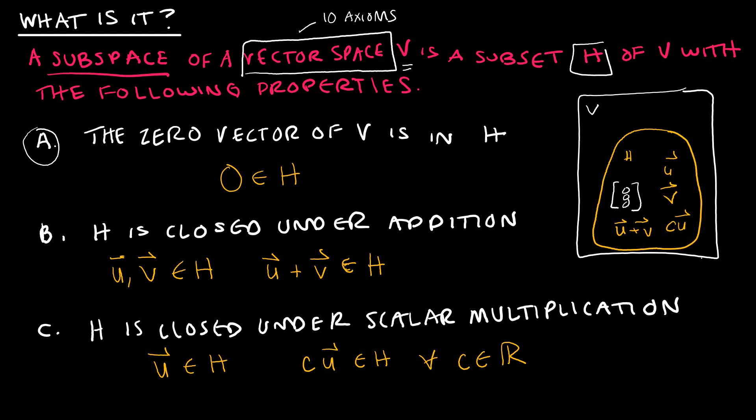So those are the three properties. Keep in mind that V has already met these 10 axioms. So for H, we really just need to check that these still hold true for that smaller, typically smaller subset. I would also point out that every subspace is then a vector space. Once we meet this requirement using these three properties, those subspaces are all vector spaces. We don't have to check the 10 axioms, only these three. We can also say that every vector space is a subspace of itself.